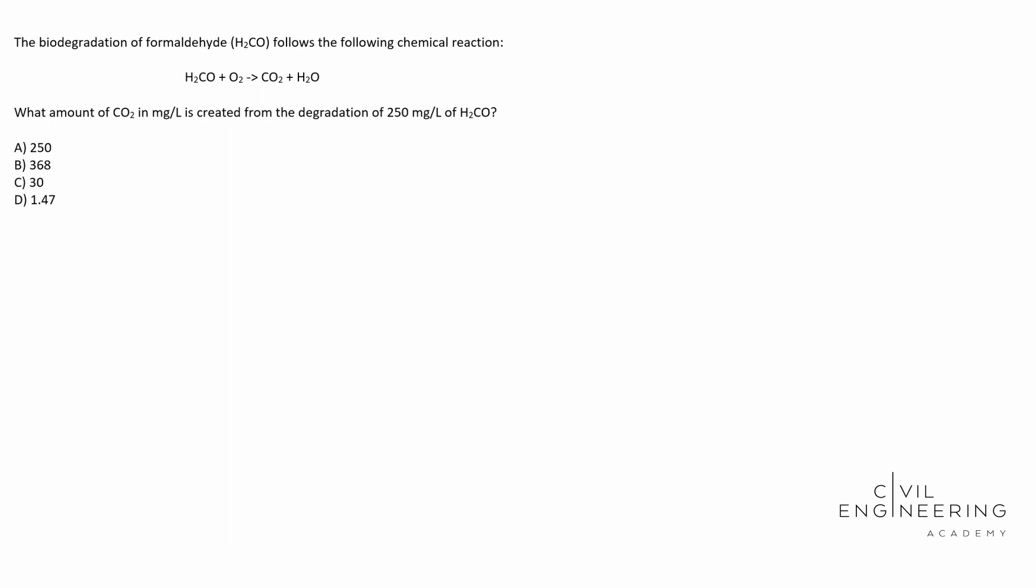The biodegradation of formaldehyde follows the following chemical reaction. Then it gives us the formula there for formaldehyde. And then it says we're introducing oxygen to it, and then it produces CO2 and water. What amount of CO2 in milligrams per liter is created by the degradation of 250 milligrams per liter of formaldehyde?